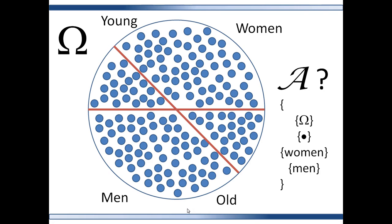We get even more information if we divide this set further by healthy and unhealthy, insured and uninsured.